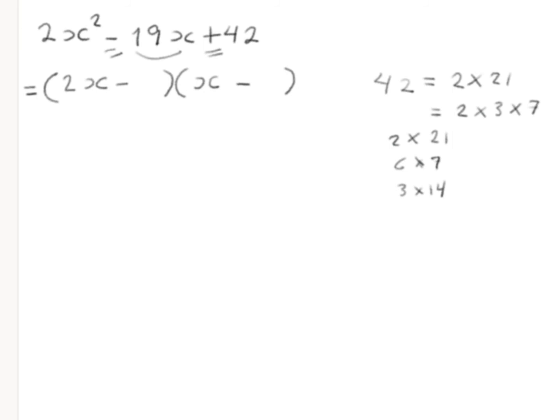Okay. To get 19x here, negative, negative. So the two values must be less than 19. And if you multiply 2x and this one, this must be less than 19. Maybe 6 and 7.